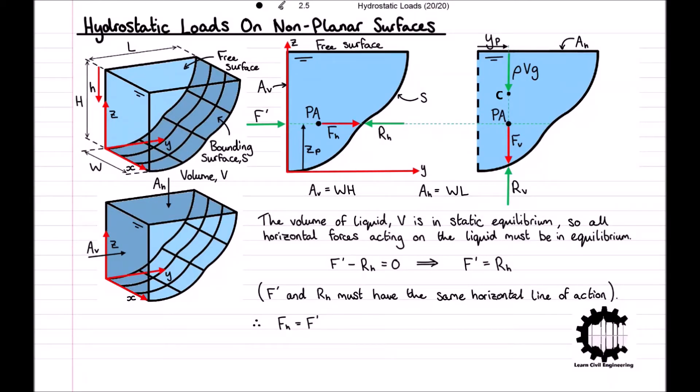We can easily calculate the magnitude of F' and its point of action XPZP using the techniques we used in the video where we calculated the hydrostatic load on a vertical end wall. So it follows that F', which we know equals FH, is equal to one-half rho GH AV, and that the point of action is positioned at XPZP equals one-half W, one-third H.